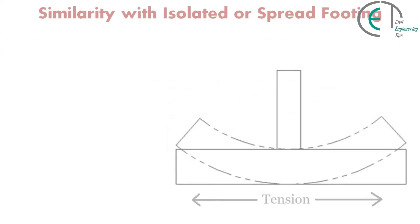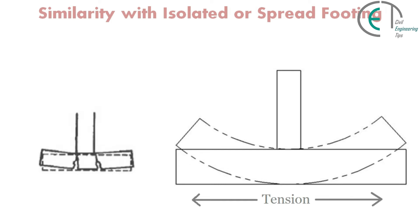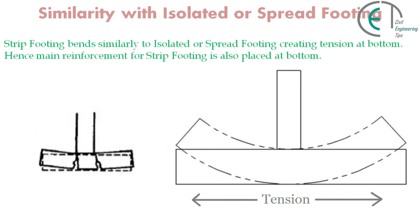There is a similarity with isolated or spread footing. Strip footing bends similarly to isolated or spread footing, creating tension at the bottom. Hence, the main reinforcement for strip footing is also placed at the bottom.